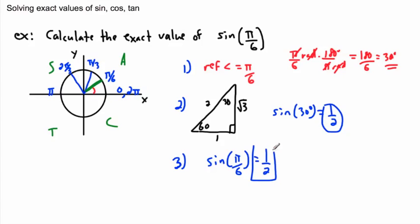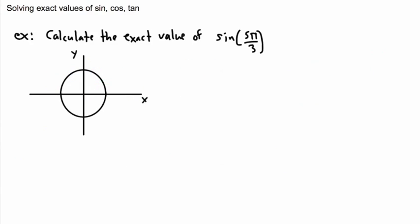It's always nice to convert the answer back using the original terms they gave you — π over 6 rather than 30 degrees. That way it looks a lot nicer.